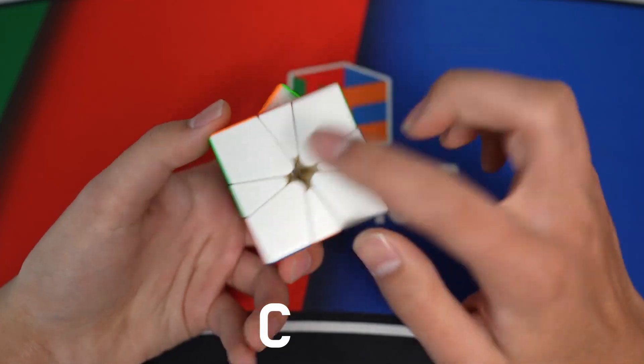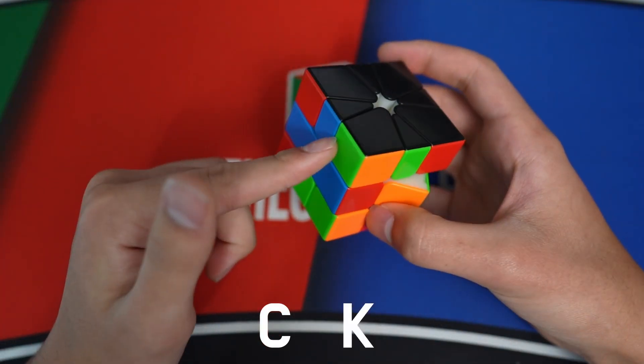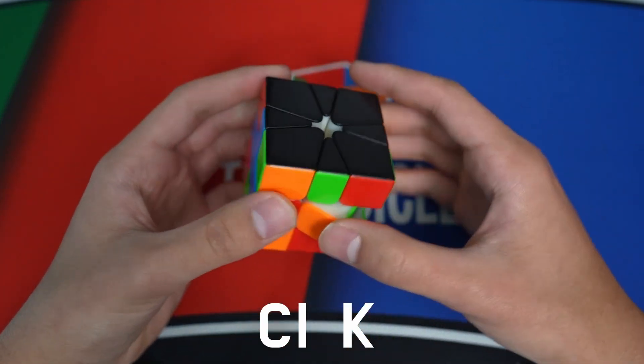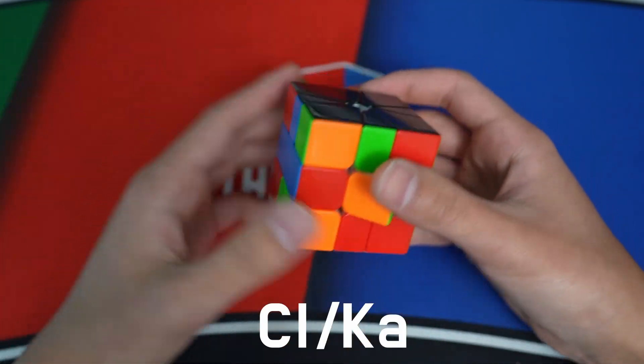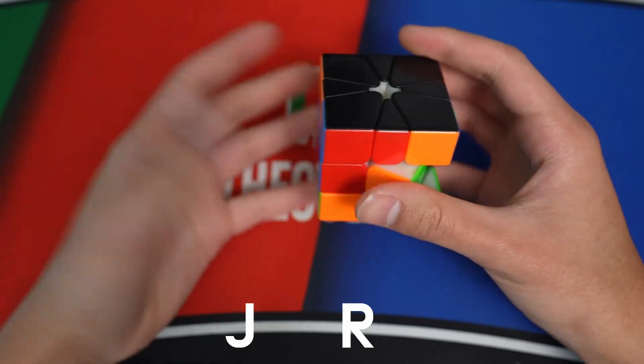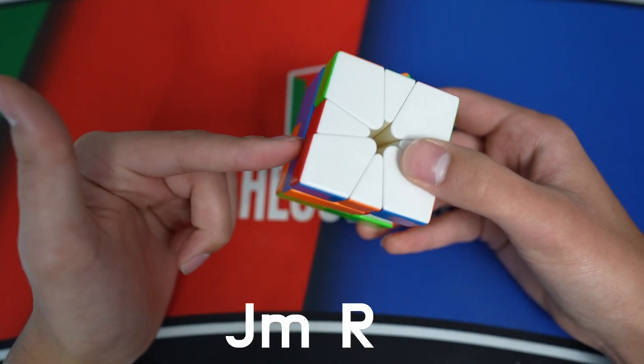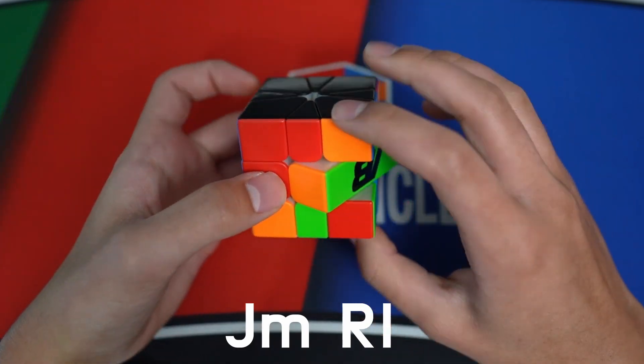Here we have a C perm and a K perm. Here the pseudo-G block is on the left, so this is CL. And here the K is aligned, so it's KA. So we have CL-KA. Here we have a JR, but which one? Well, the J is misaligned, so it's JM. And here the R, the block is on the left, so it's RL. So we have JM-RL.